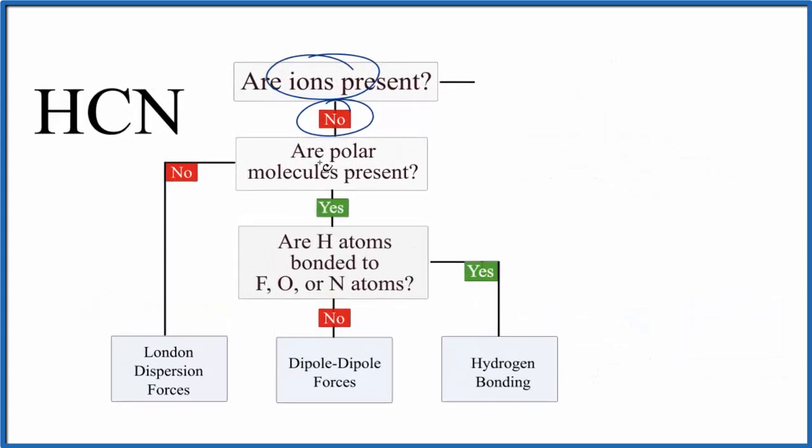Next, we need to know if we have polar molecules, so is HCN a polar molecule? It's helpful to look at the Lewis structure for that. So we have our hydrogen, carbon, and nitrogen, and they're bonded together.